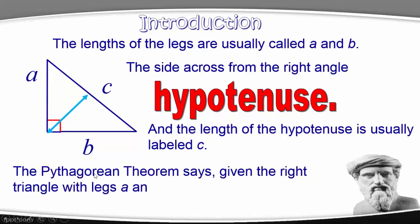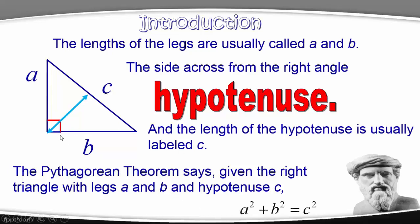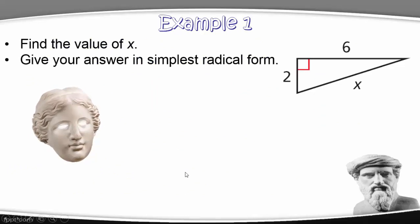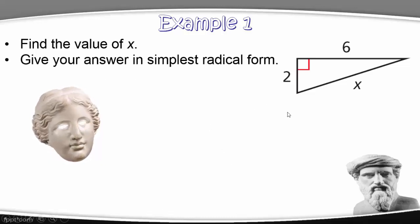So again, the Pythagorean Theorem says that given a right triangle — when it has a right angle we call it a right triangle — with legs A and B and hypotenuse C, A squared plus B squared, meaning the lengths of these sides, is equal to C squared, the length of the hypotenuse. Now we're going to look at Example 1, where we find the value of X and give the answer in simplest radical form.